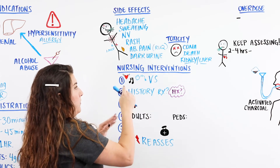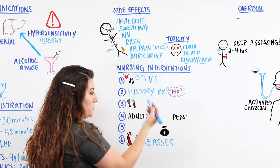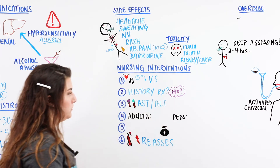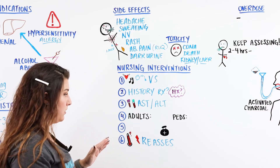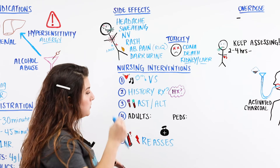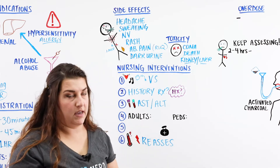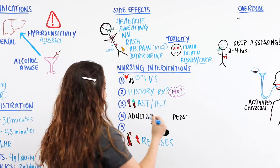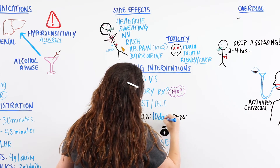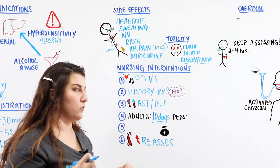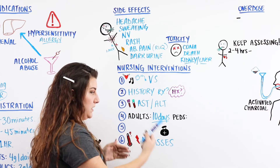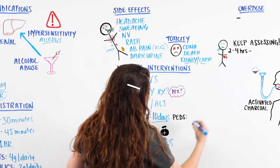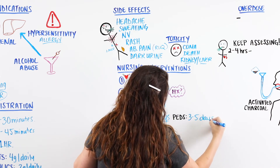If we think something is going on, we can check blood work — specifically AST and ALT, which are liver enzymes, to confirm the liver looks okay. Additionally, for adults, if they've been taking Tylenol for 10 days in a row, they should seek medical help and inform their doctor. For pediatrics, if they're taking it for three to five days, they should be seeing their pediatrician.